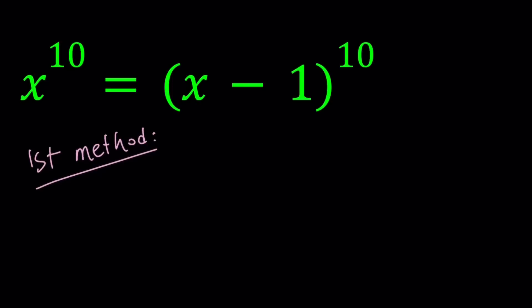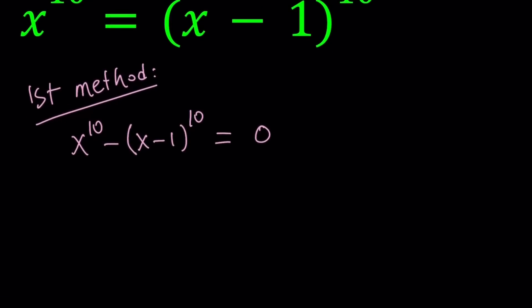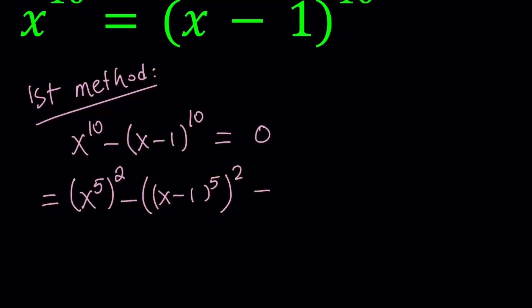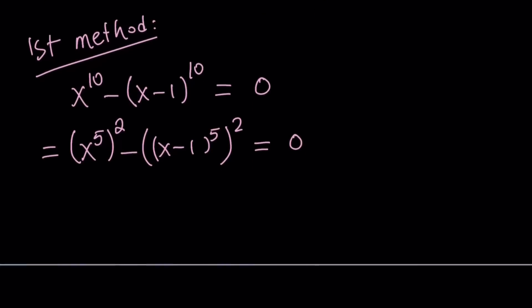For my first method I'm going to write this expression as a difference of two powers — in this case the 10th powers — and set it equal to zero. We can think of this as a difference of two squares if we consider 5 times 2 equals 10. So we can write this as x to the fifth power squared minus x minus 1 to the fifth power squared equals zero. This became a difference of two squares, and as you know there is a formula: a squared minus b squared can be factored as a minus b times a plus b.